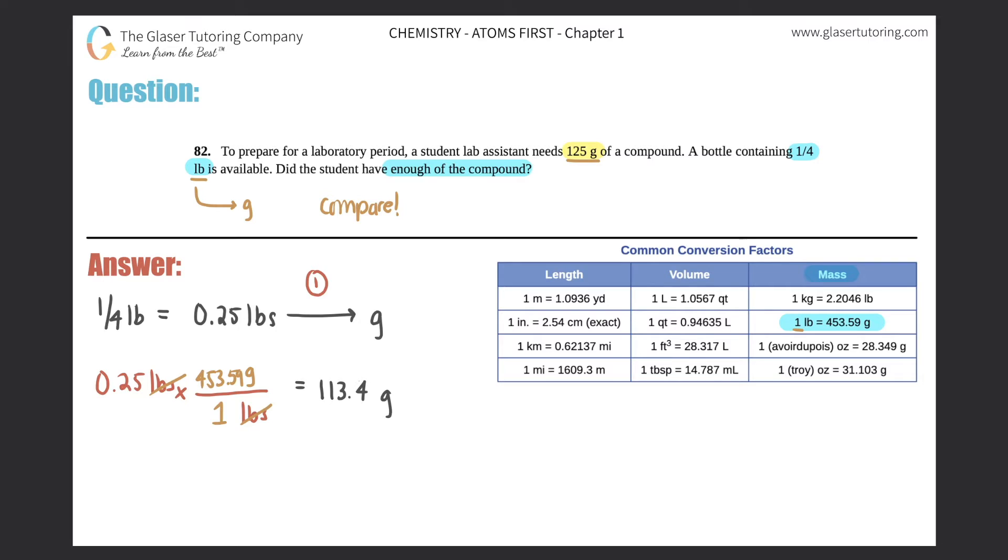Now, the sig figs here don't really necessarily matter because they didn't ask for the specific amount. They just asked, did the student have enough? So if I was going by the 0.25, I would need two sig figs here. So the one and the one would count.